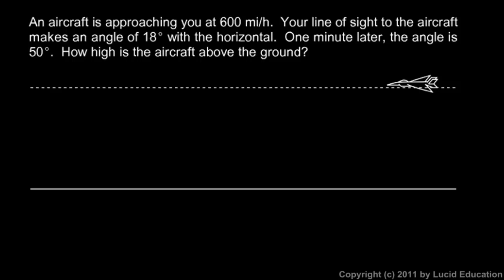In the next example, an aircraft is approaching you at 600 miles an hour. Here's the plane, headed to the left in this diagram, moving along at 600 miles an hour. It's not coming directly at you because you're down here on the ground and it's flying horizontally.